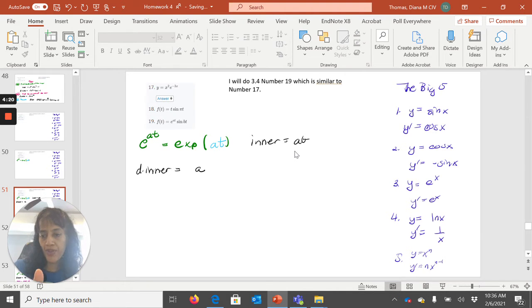If you cover up the inner with your thumb and you replace your thumb with a t, then the outer function is e to the t. The derivative of the inner is easy. It's a.